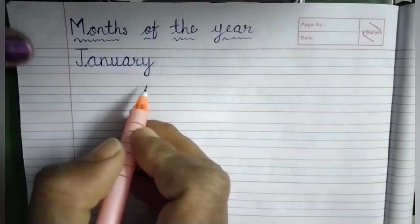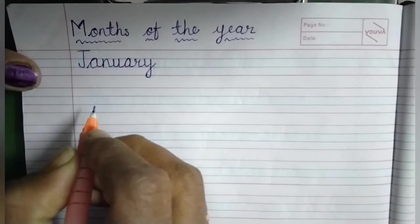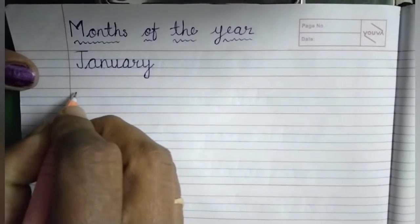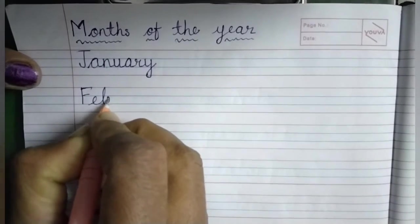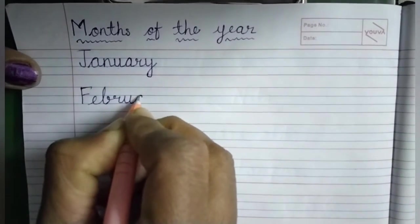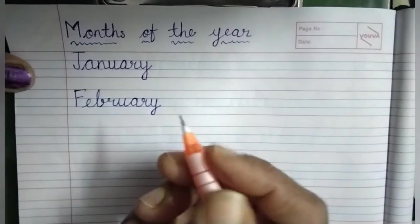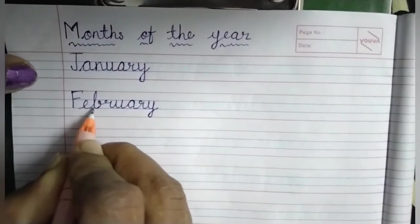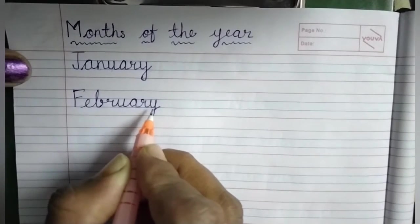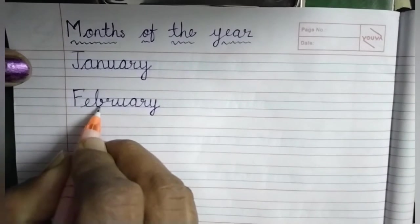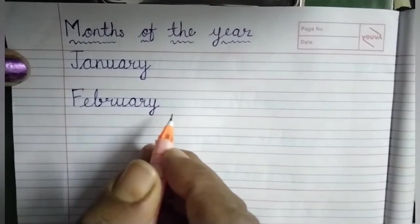Our second month of the year is February. And the spelling of February is F-E-B-R-U-A-R-Y, February.